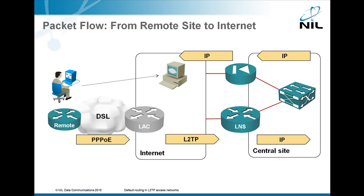As you can see, the packet goes from the remote site to our central site, through our central firewall, and off to the remote web server. As you cannot know where the remote web server is, you obviously need a default route from the LNS pointing toward the core of your central site.